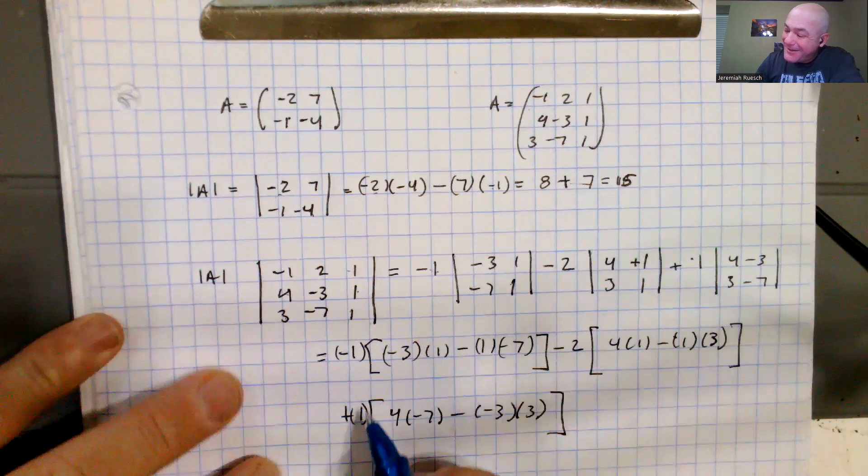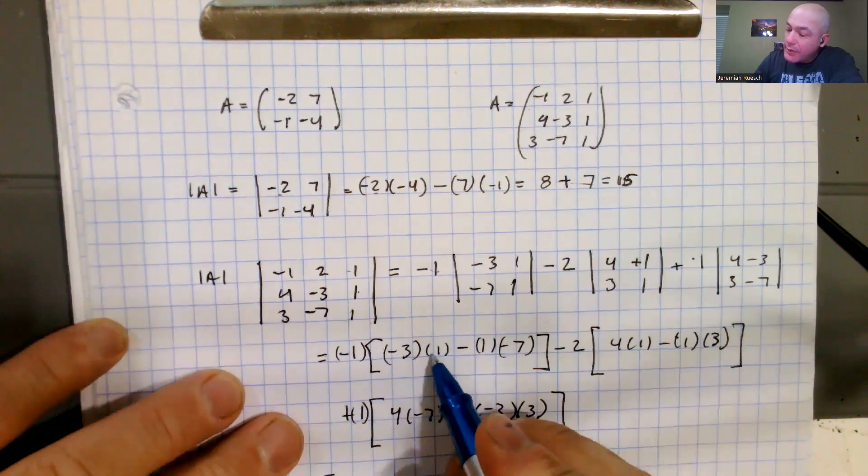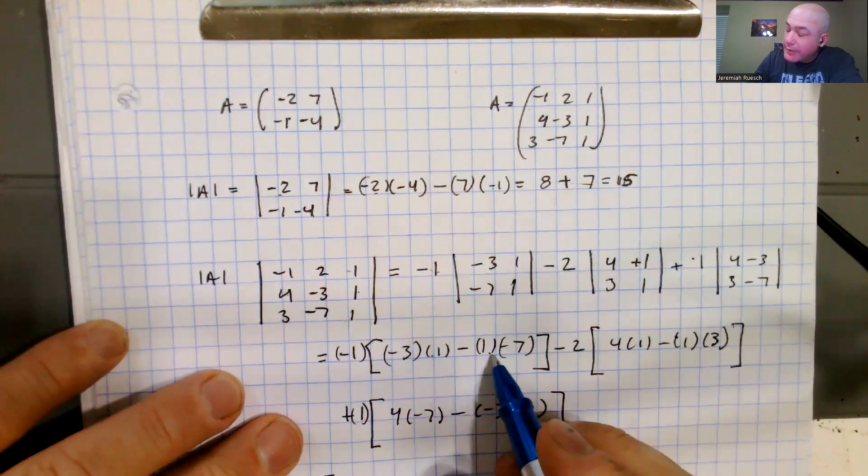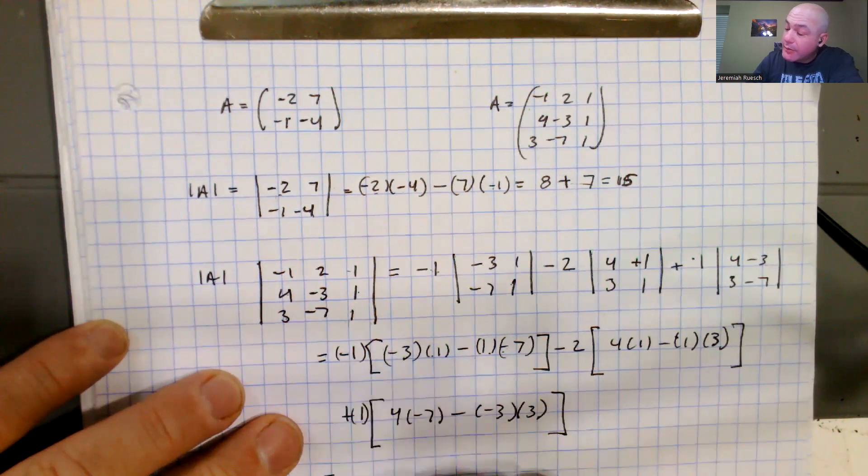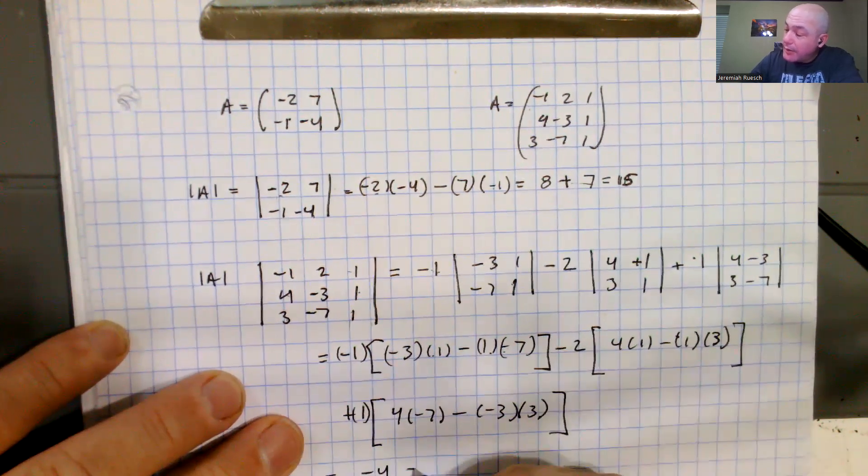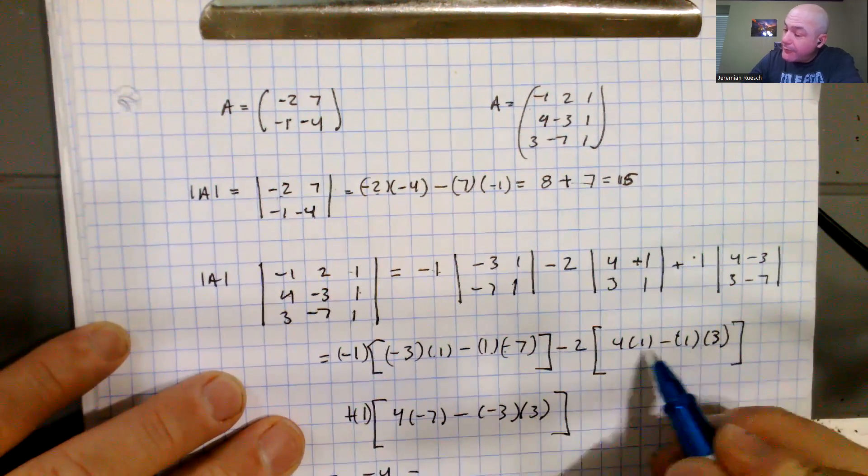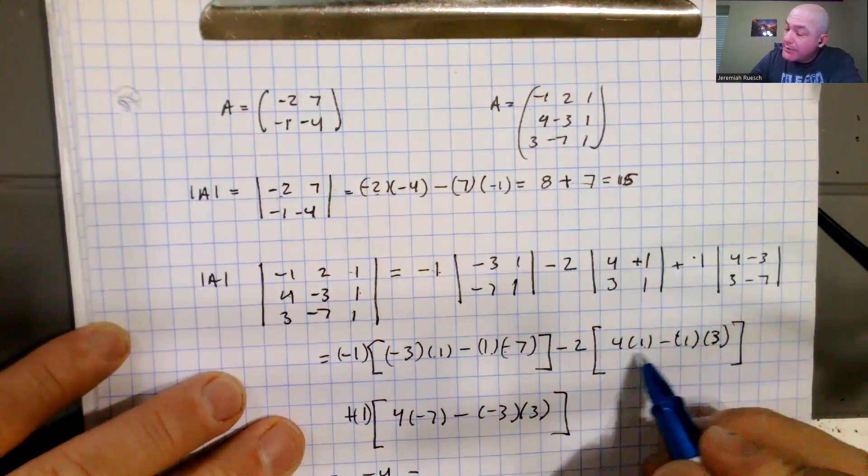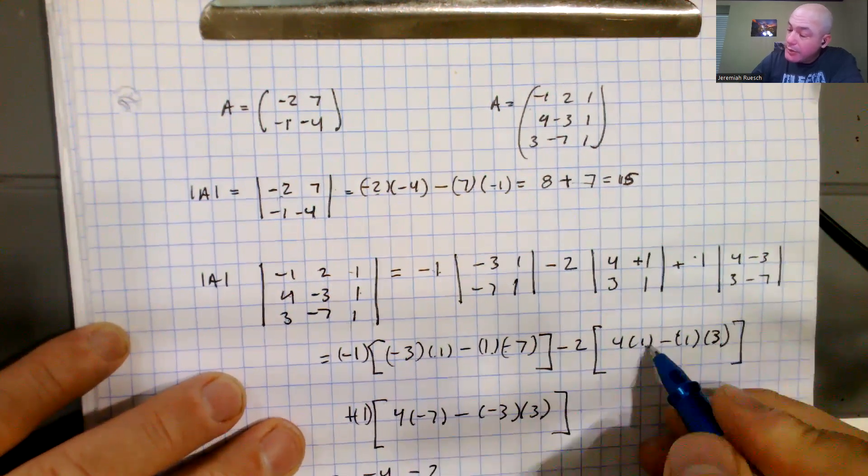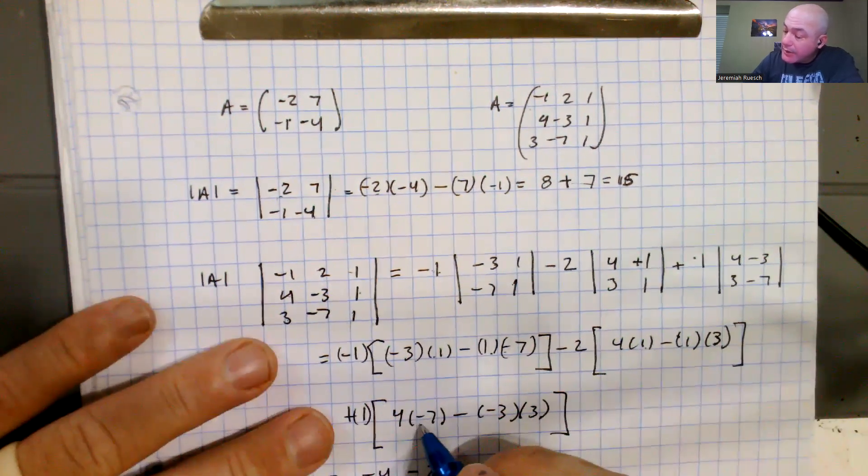Okay, all right, simplifying things out, negative 3, this is a positive, so it's negative 3 plus 7, negative 3 plus 7 makes this a positive 4, times a negative 1 makes that a minus 4. Coming over here, let's see, we have 4 minus 3, so that makes this a positive 1 times a negative 2 minus 2, and then over here,